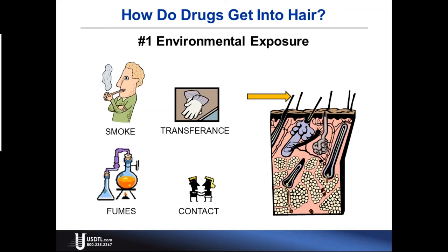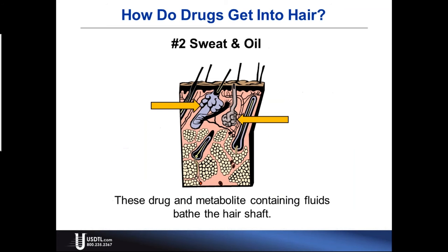Route number two is the sweat and oil from the scalp. As these fluids — they contain drug and drug metabolite — bathe the hair shaft, they deposit the drug and drug metabolite onto the hair. Once again, it works its way into the nooks, crannies, and pores, binds to the proteins and pigments, and is available to be harvested and analyzed. We begin seeing that drug show up a few hours following the dose.